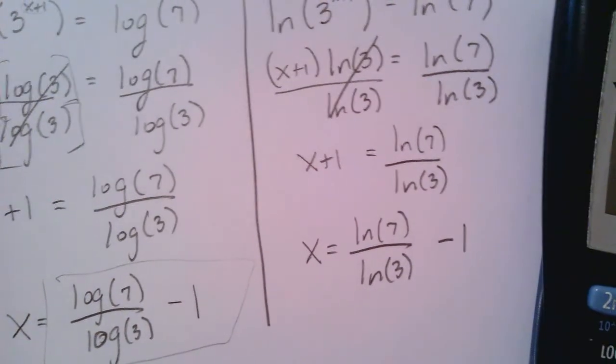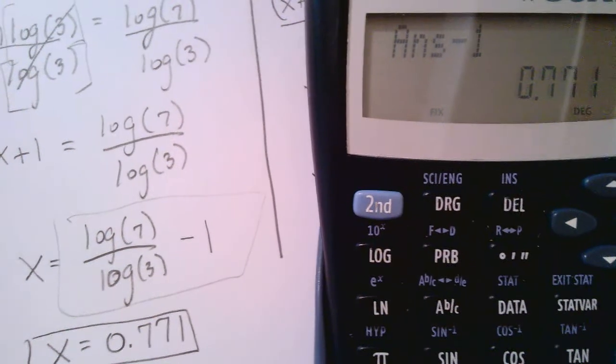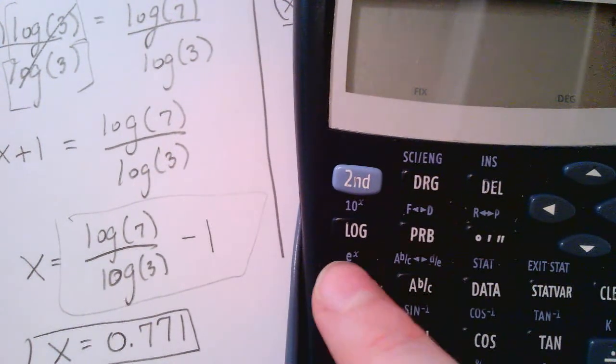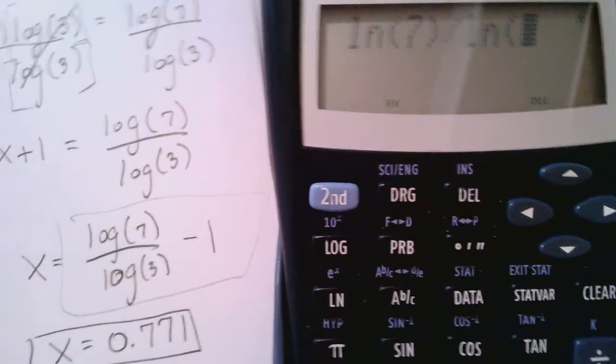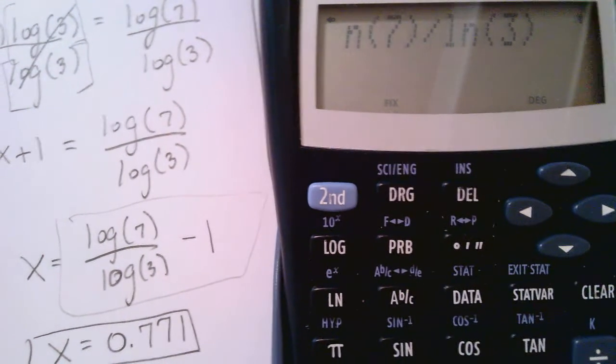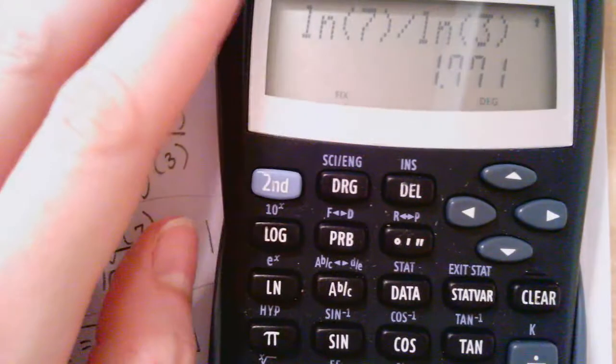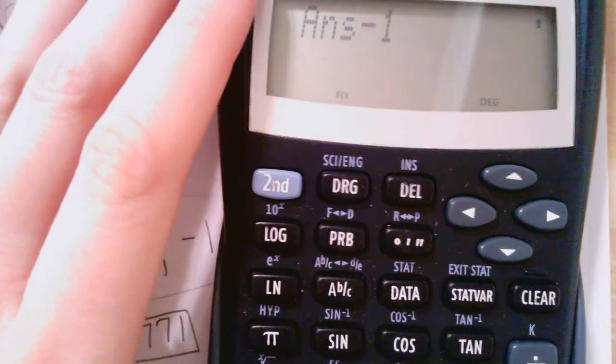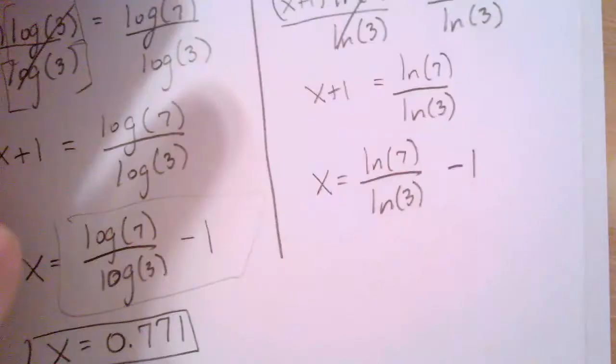Now it's time for calculator to finally convince ourselves that it would work with any base, absolute any base. Let's take natural log of seven, divide by natural log of three. At this point, I'm going to hit equals. So I've just done this part here. Now I'm going to subtract one. Subtract one. And as we expected, we get the exact same answer of 0.771.